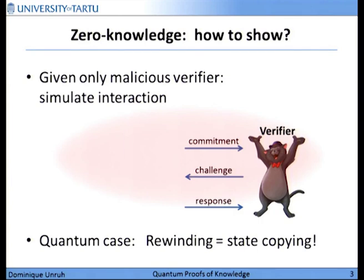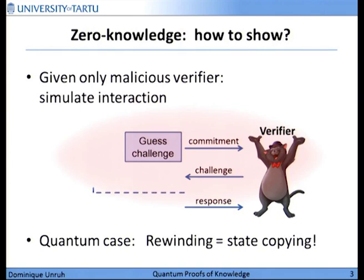What the simulator does in many situations is he first guesses the challenge. Then, if he knows what the challenge will be, he can construct the commitment so that everything will go through. And then, if he guessed right, everything works and he produces a good transcript. If it doesn't, he just goes back, tries again, and repeats until he guessed the challenge right. This works well if the challenge space has only polynomial size, like only two challenges.